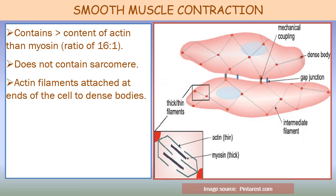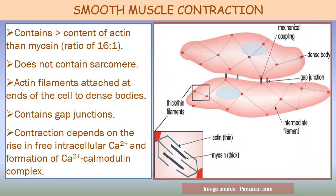Further differences between skeletal and smooth muscle: the thin filaments or actin filaments are anchored either to the plasma membrane or to cytoplasmic structures known as dense bodies. Some of the membrane dense bodies of adjacent cells are bonded together by intracellular protein bridges. It is mainly through these bonds that the force of contraction is transmitted from one cell to the next. There are also gap junctions in smooth muscles. The contractile process is activated by calcium ions and ATP is degraded to ADP to provide energy for contraction. Contraction depends on the rise in free intracellular calcium ions and formation of the calcium-calmodulin complex.